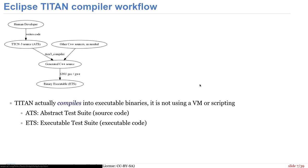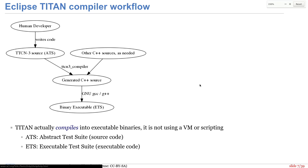Die Toolchain funktioniert wie folgt: Man entwickelt Code in der TTCN-3-Sprache und hat dann eine sogenannte ATS, eine Abstract Test Suite. Den Quellcode wirft man in den TTCN-3-Compiler und kriegt C++-Quellcode generiert. Den wirft man dann in GCC oder Clang. Das hat den angenehmen Vorteil, dass man C- oder C++-Code, den man schon hat – etwa für Prüfsummen-Implementationen – einfach mit dazu linken und benutzen kann.